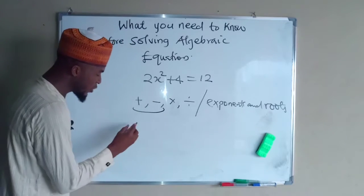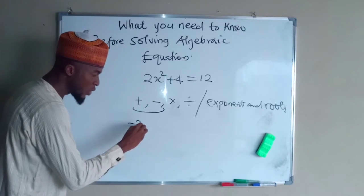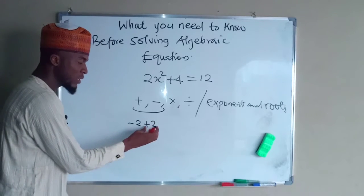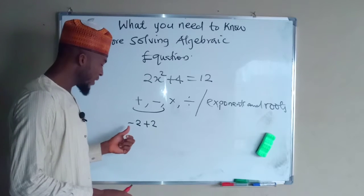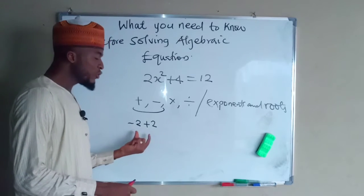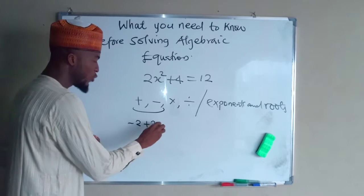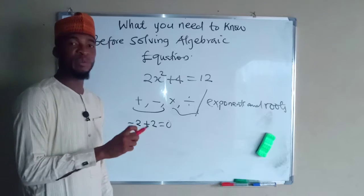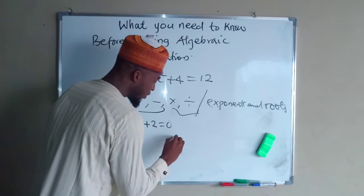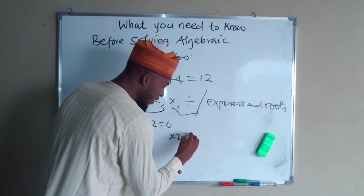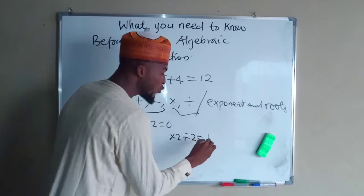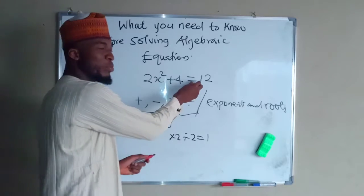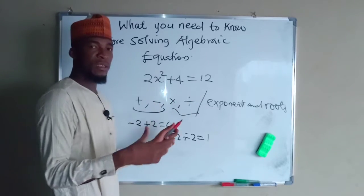Suppose you have negative two connected with positive two — these two values share only the sign, so they neutralize each other to become zero. But for multiplication, two multiplied by one-half, or times two divided by two, equals one — they neutralize themselves to become one. This is the fundamental concept.